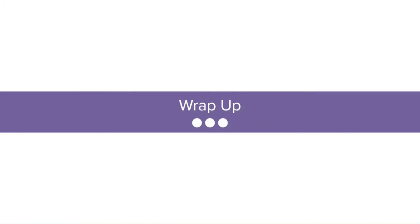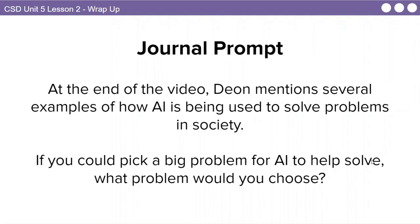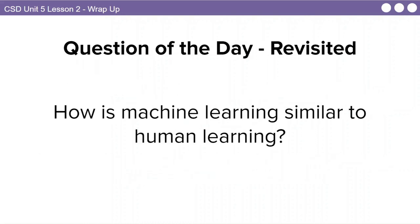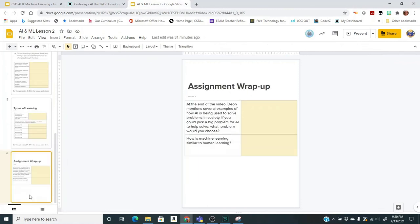At the end of the video, Dion mentioned several examples of how AI is being used to solve problems in society. If you could pick a big problem for AI to help solve, what problem would you choose? Go to your assignment document — we're at the wrap-up now — and you have a place to answer this question. We're also going to revisit our question of the day: how is machine learning similar to human learning? I'm going to give you some time to answer these two questions, and when you're finished, you are ready to turn it in.